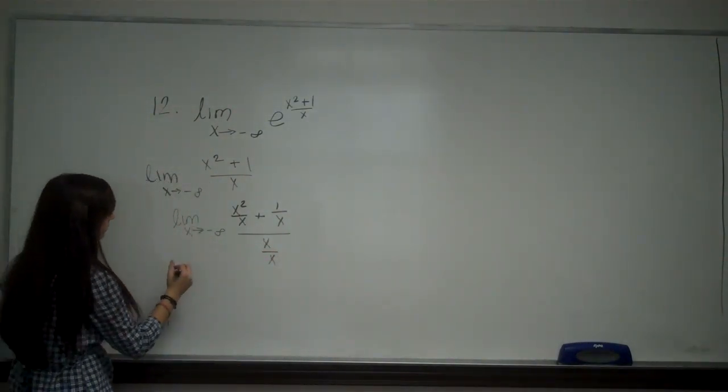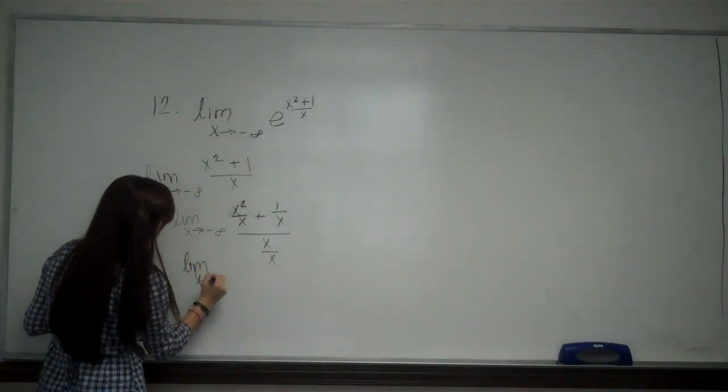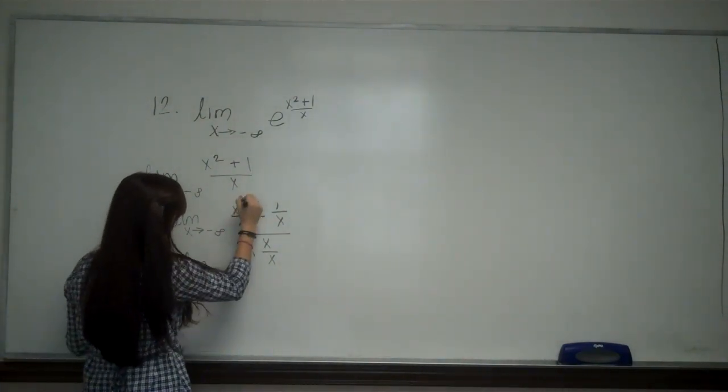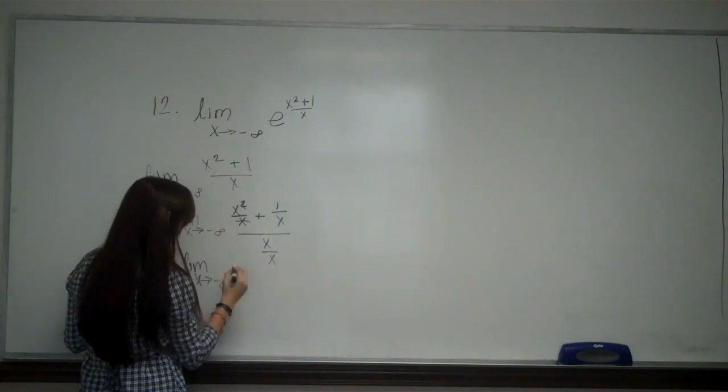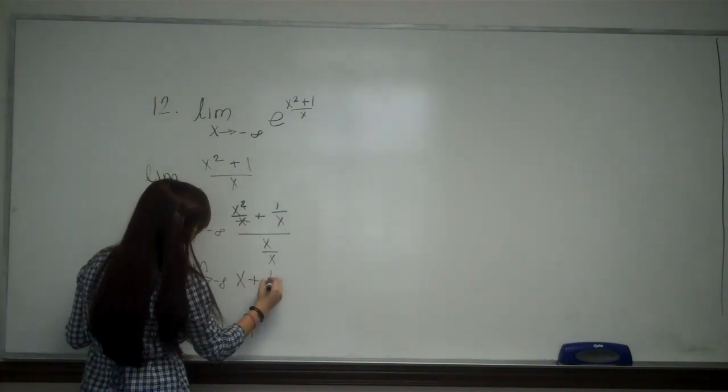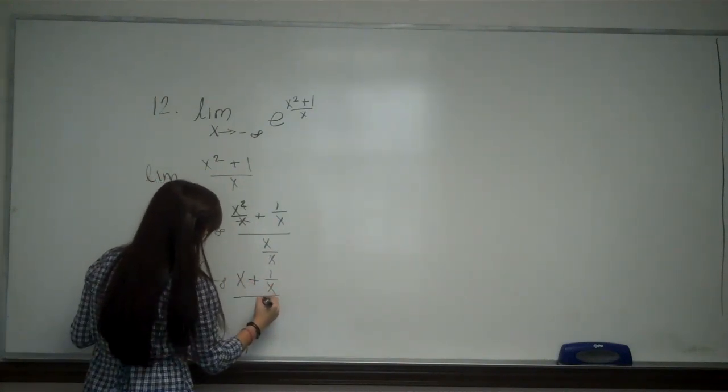This can be simplified to the limit as x approaches negative infinity. The square cancels with this one, so I'm just left with x plus 1 over x and the bottom is 1.